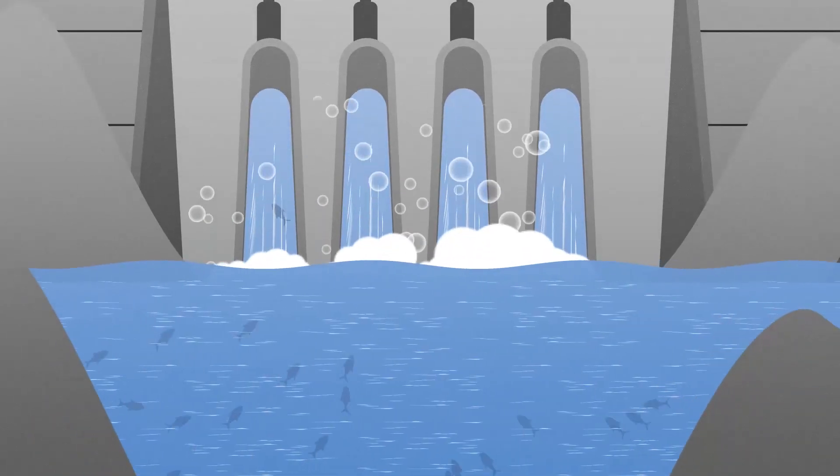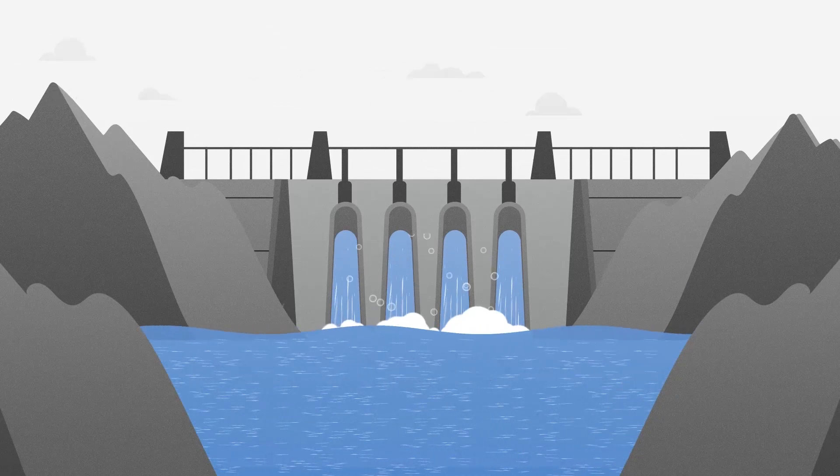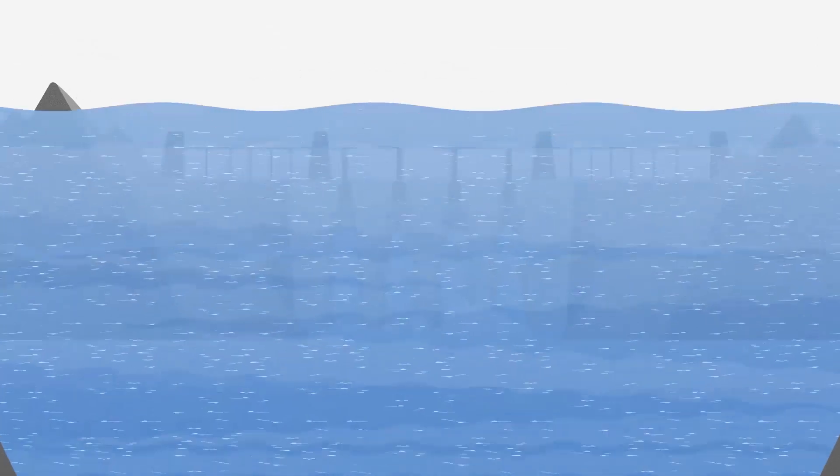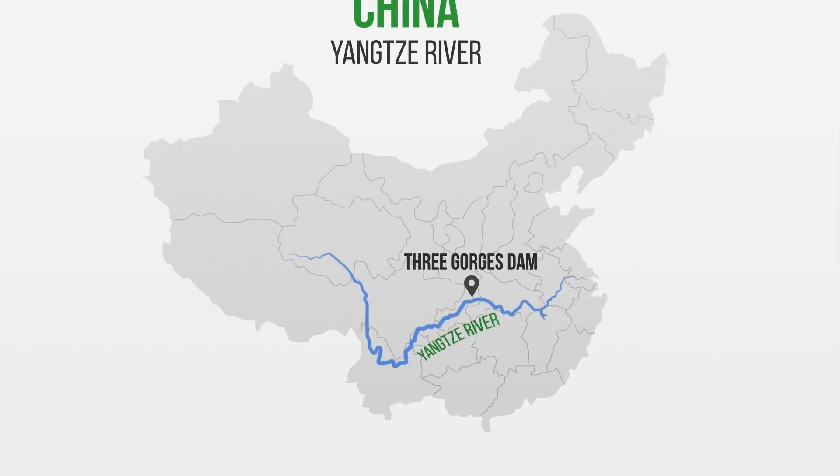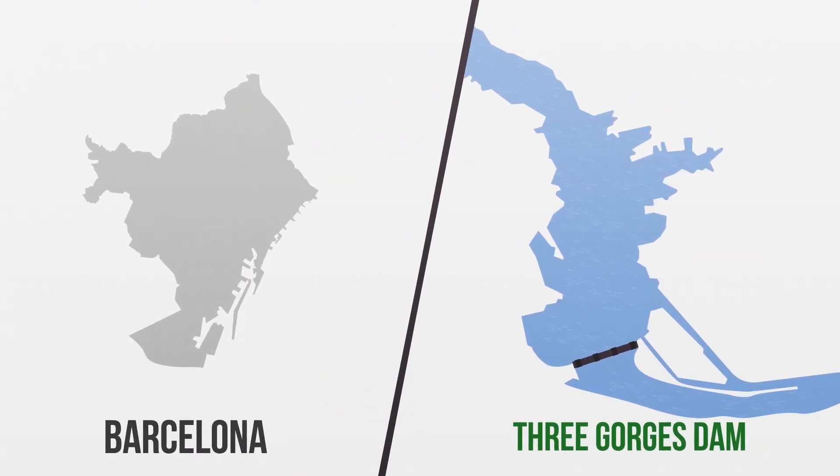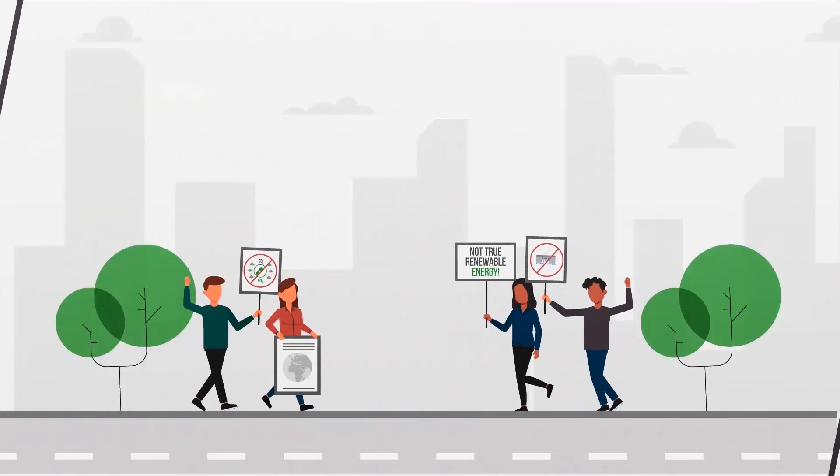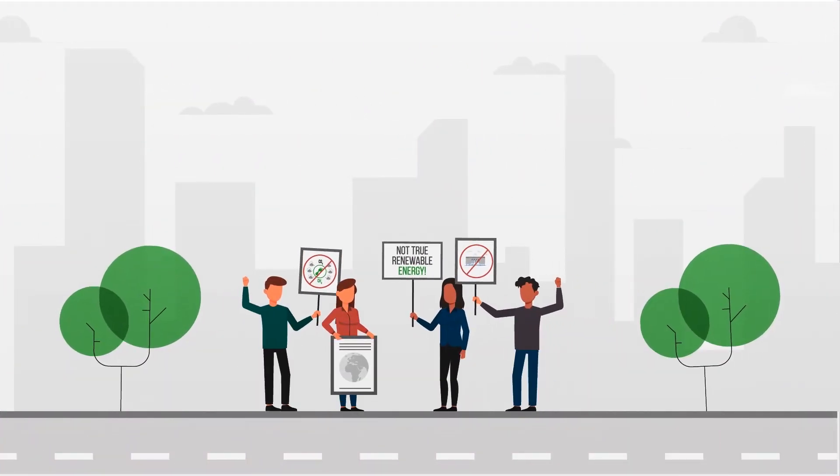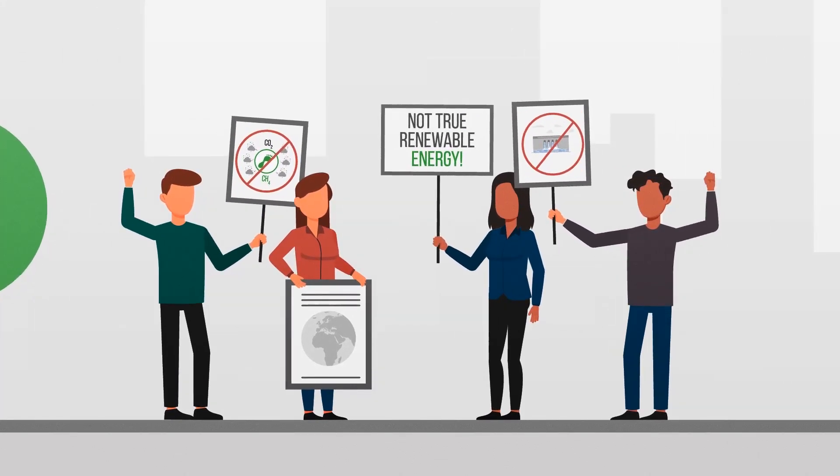These reservoirs also restrict the migration of fish, like salmon, who migrate upriver systems for mating. The area that these reservoirs flood can also be enormous. The largest hydroelectric dam in the world, the Three Gorges Dam on the Yangtze River in China, has a reservoir the size of Barcelona and displaced 1.2 million people when it was built. It is for these reasons that many environmentalists don't view impoundment dam hydroelectricity as a true renewable source of energy.